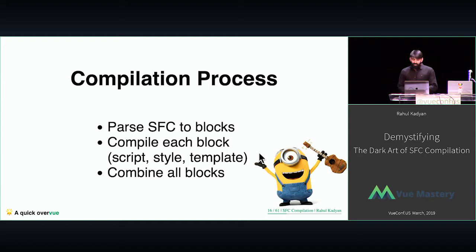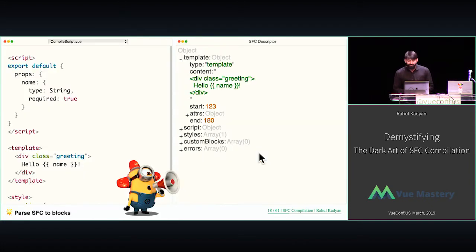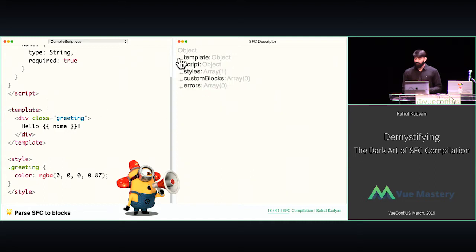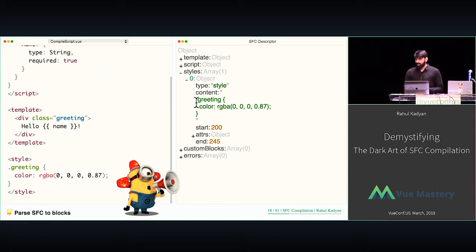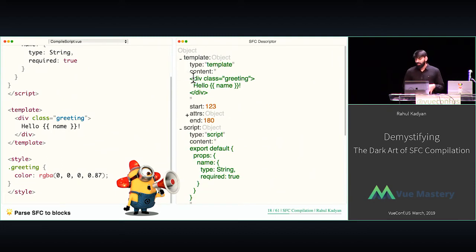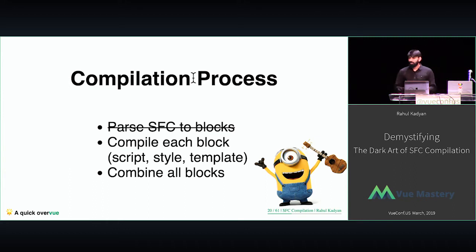Let's start with our compilation process. Step one: parse the SFC into blocks. There would be lots of code today, and you don't have to look at it — just understand the process. We give the SFC to the parser, and it gives us an object with style, script, and template blocks along with their content — so we can work on individual blocks one by one. Use vue-template-compiler, pass the component, and it just gives you the blocks.